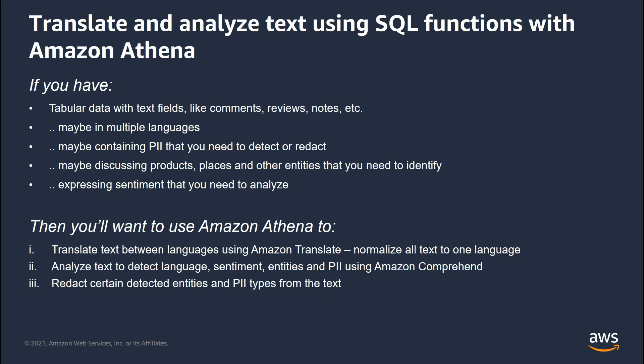The text may be discussing your products or places, other entities that you need to identify for analysis. And people might be expressing sentiment — happy thoughts or sad thoughts — that you want to identify so that you can do analysis and figure out what actions to take. This capability I'm going to show you allows you to use Amazon Athena to do all of that.